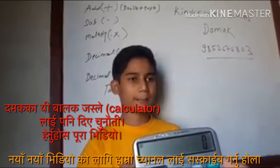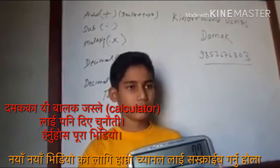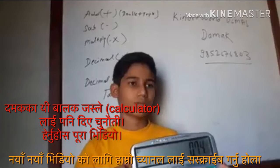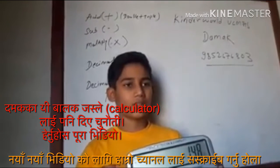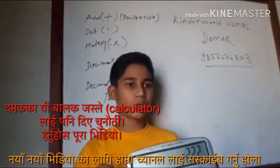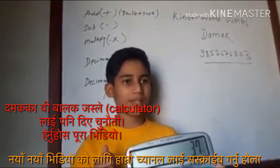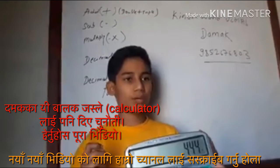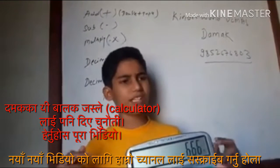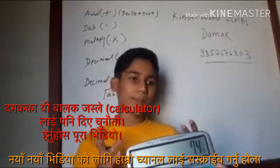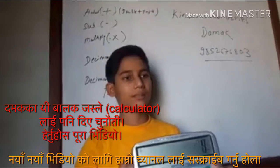Now I am going to ask you decimal multiplication: 0.74, 1.48, 2.22, 2.96, 3.70, 4.44, 5.18, 5.92, 6.66, 7.40. Yes, correct answer.